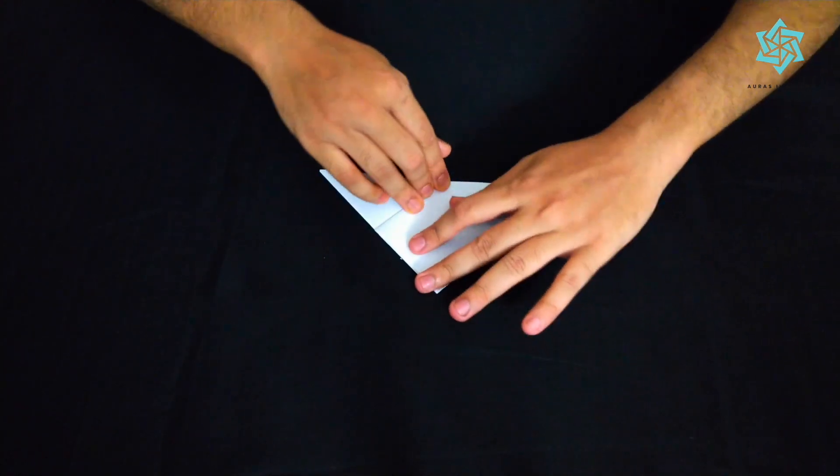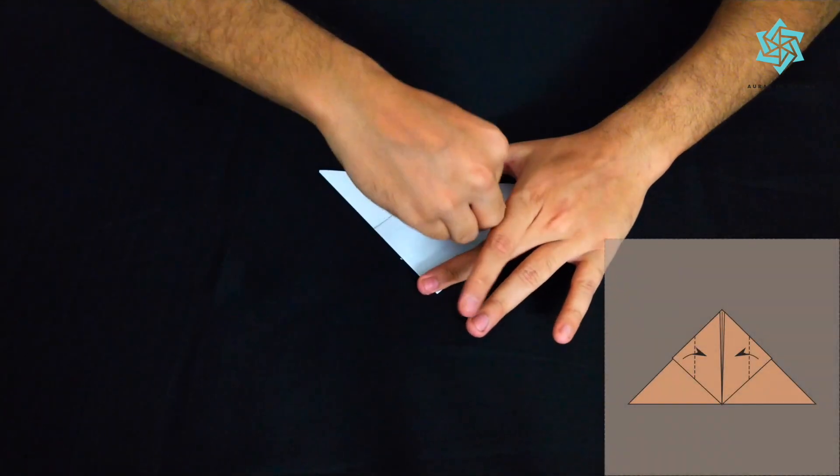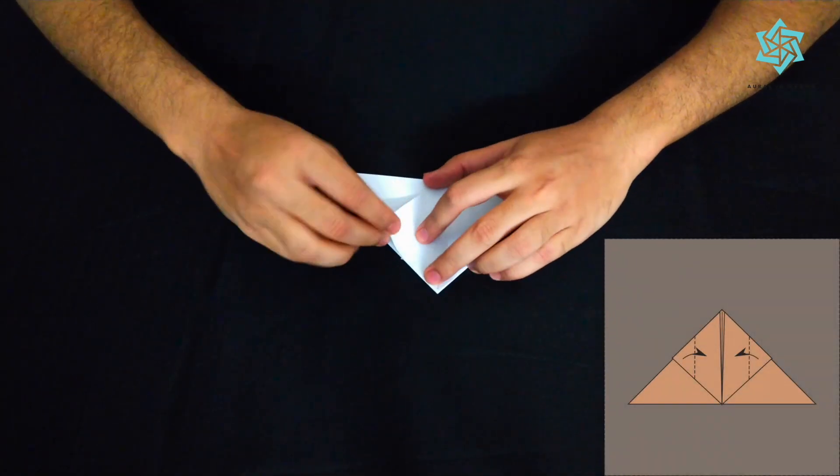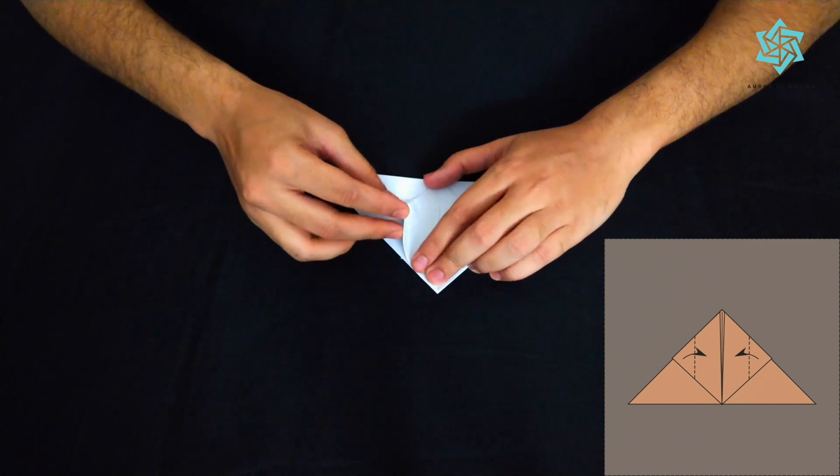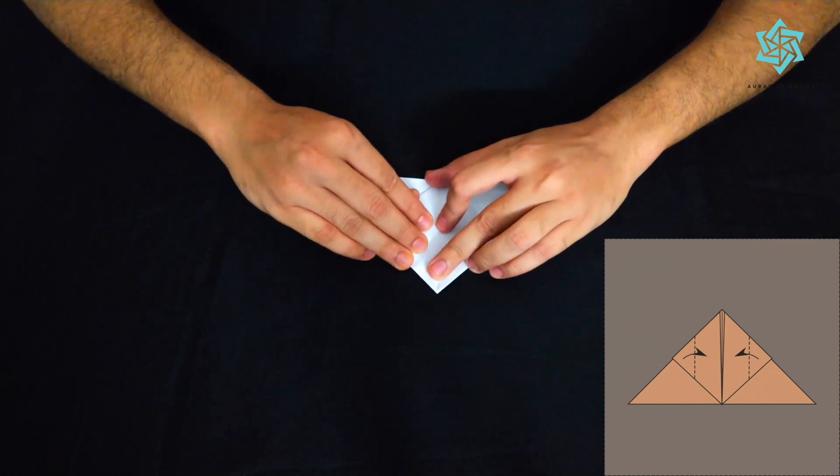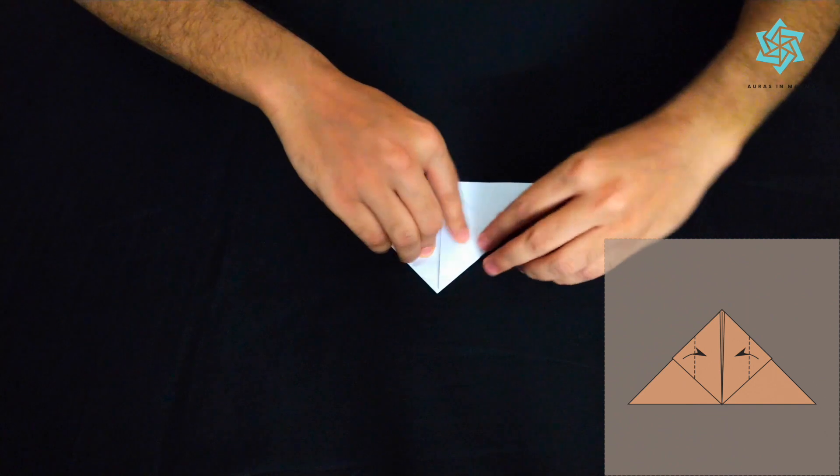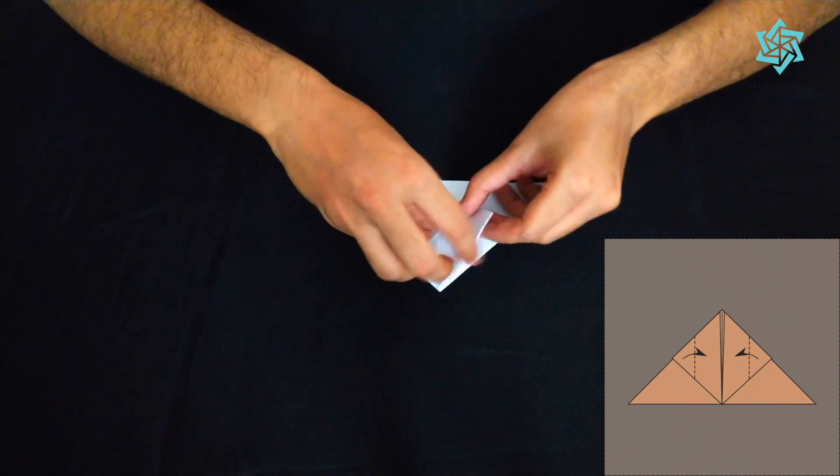Okay and we'll completely make the water bomb over here. What I mean by that is we'll take these corners of these triangles, we'll put them on the center line. Similarly over here.